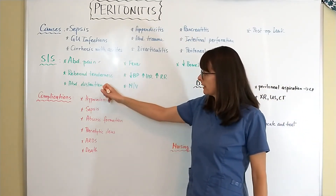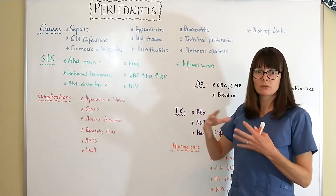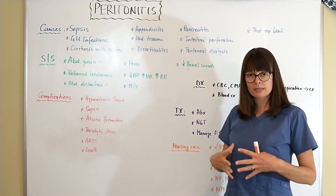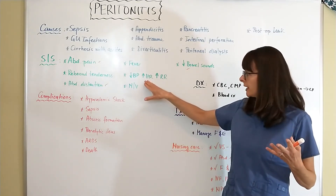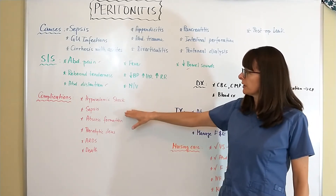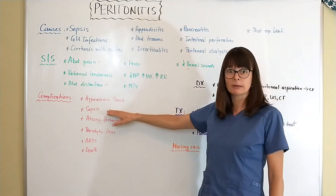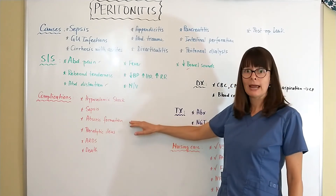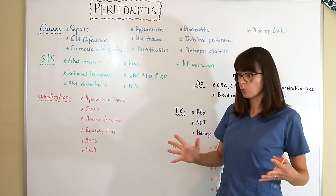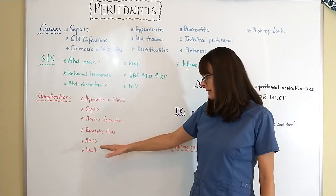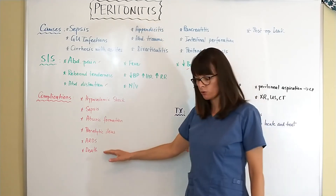The most important signs to watch are abdominal pain, distension, and decreased bowel sounds. Complications of peritonitis include hypovolemic shock, as fluids escape the vascular and digestive systems causing loss of blood pressure. A localized infection like appendicitis or diverticulitis can spread to become systemic sepsis. Other complications include abscess formation, paralytic ileus where the intestine ceases to work, progression to ARDS, and if untreated, death. This is a very serious condition.